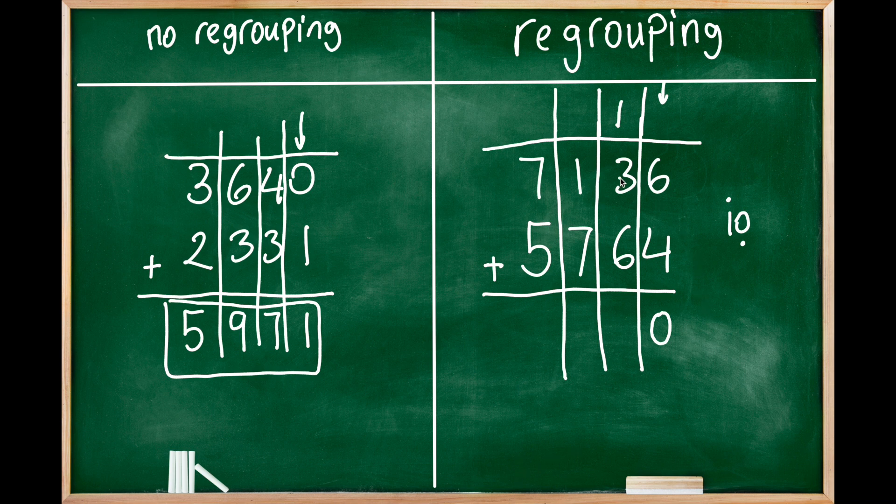We place carryovers on top of the numbers and start adding. One plus three is four, four plus six is ten again. I can't write ten here, so this is wrong. Instead...